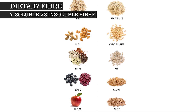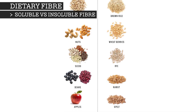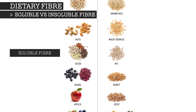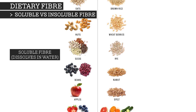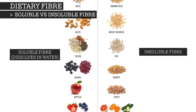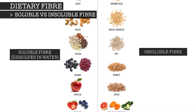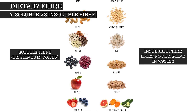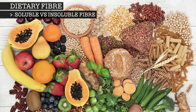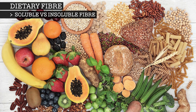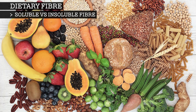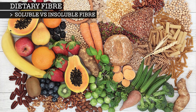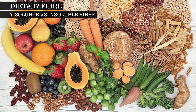Dietary fibre has two main components: soluble fibre, which dissolves in water, and insoluble fibre, which does not dissolve in water. Most plants contain both soluble and insoluble fibre, but in different amounts.